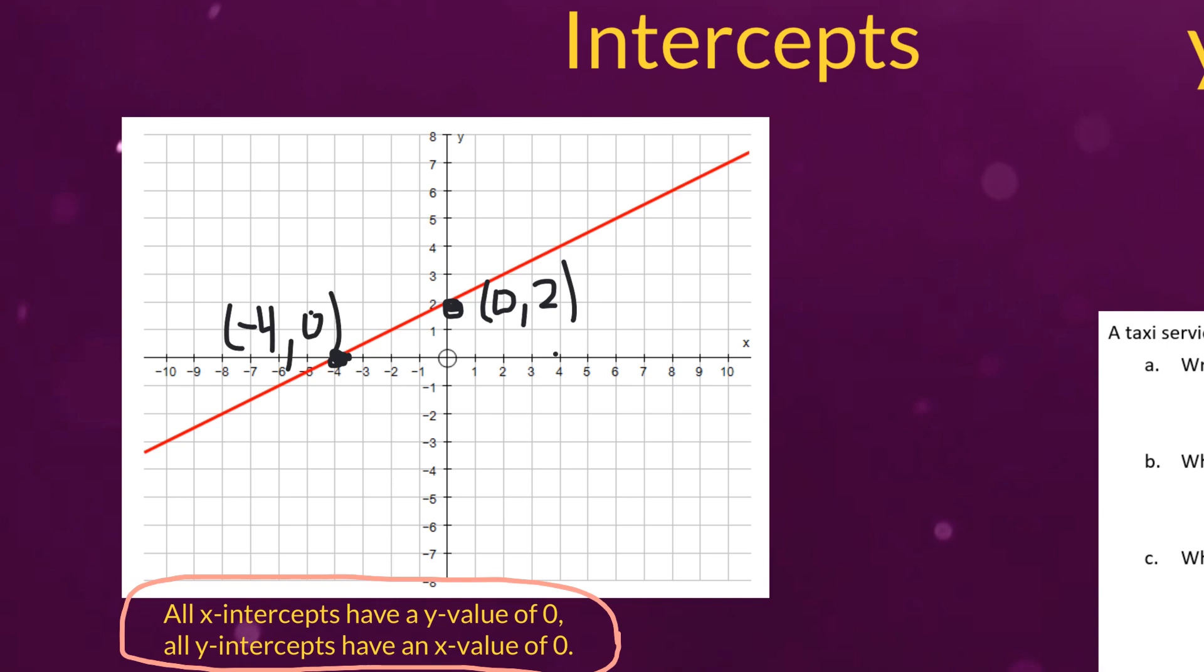So no matter where we have an x-intercept, it's always going to be along the x-axis. So that means our y-value would be 0. And anywhere we have a line that crosses the y-axis like here or down here, you'll notice that all of these points have an x-value of 0.